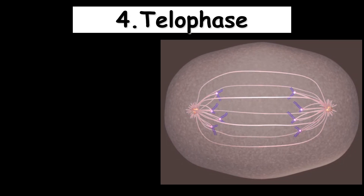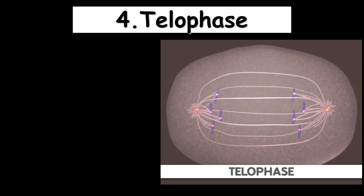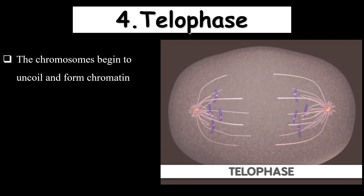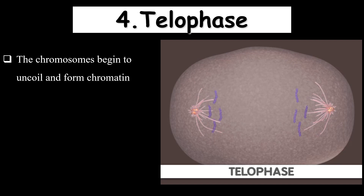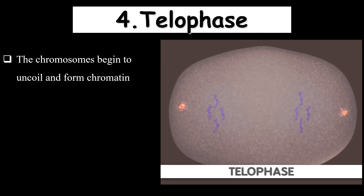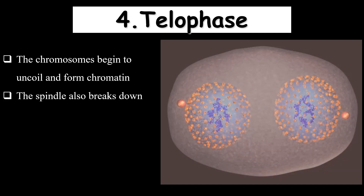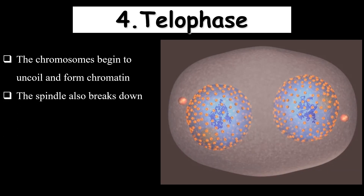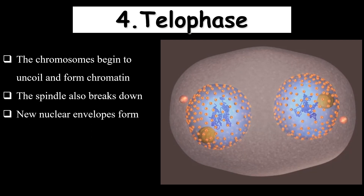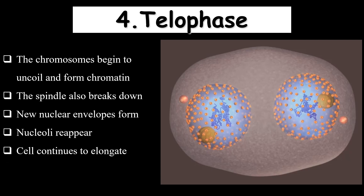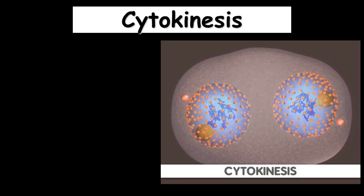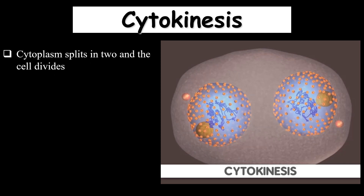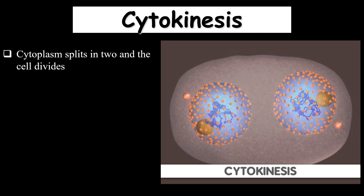The last phase of mitosis is telophase. Telophase is essentially the reverse of prophase: the chromosomes start to decondense and become a loose thread form of chromatin again. The spindle fibers disappear, the nucleolus reappears, the nuclear membrane regenerates, and finally the nucleus divides into two, each having an equal number of genetic material and other organelles. After telophase, the cytoplasm division — known as cytokinesis — takes place.